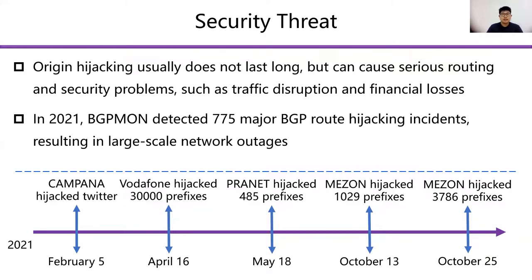In the last year, BGP MOA detected 775 major BGP route hijacking incidents resulting in large-scale global network outages.